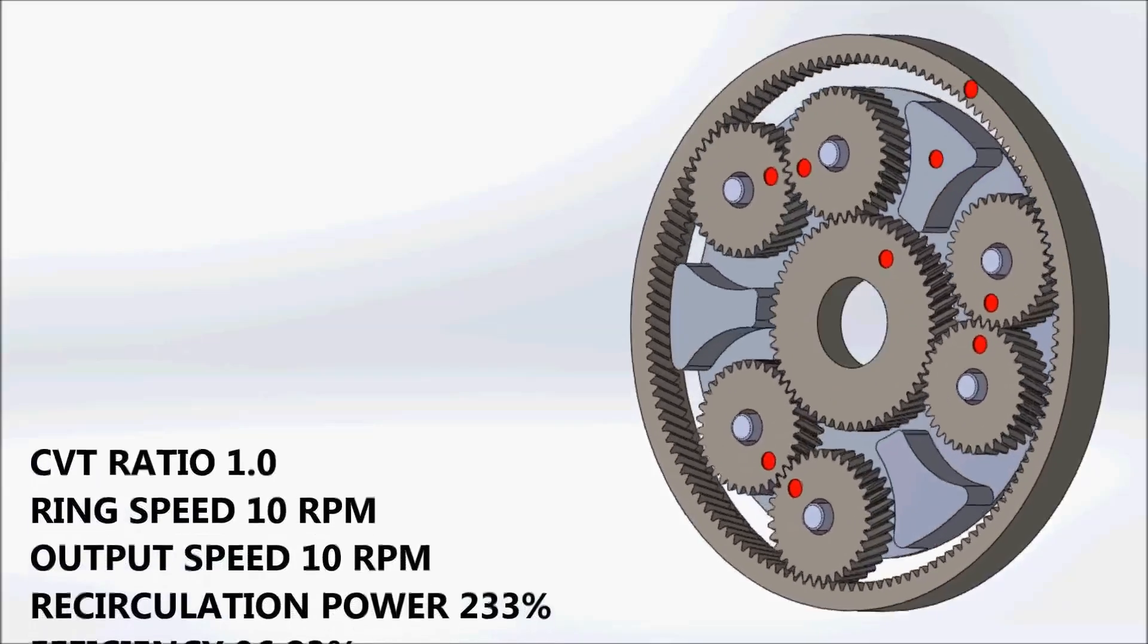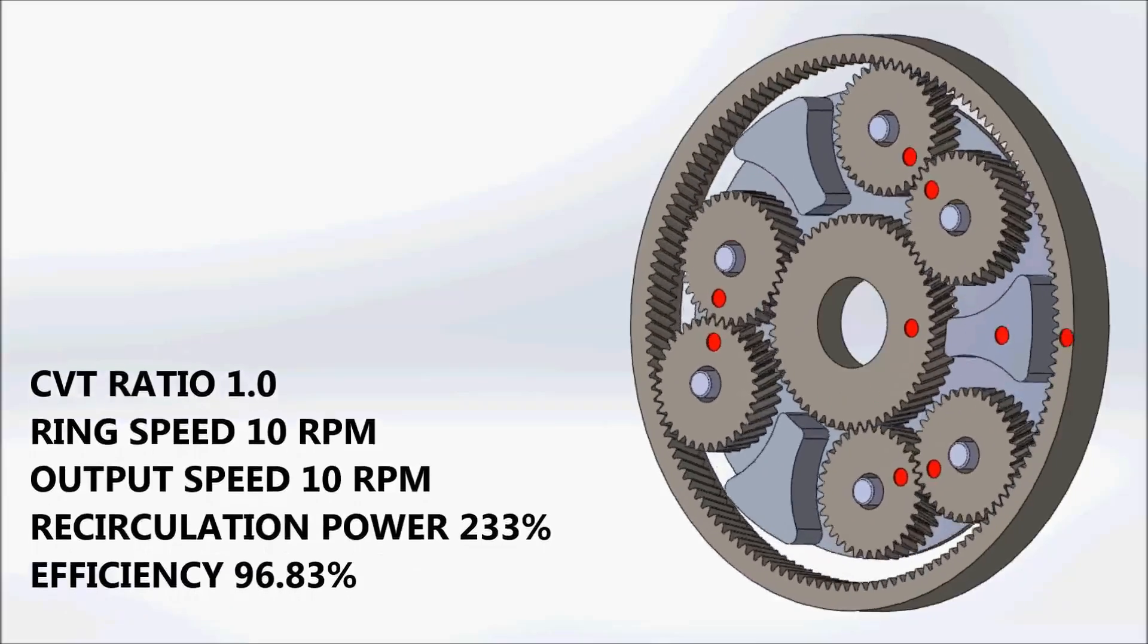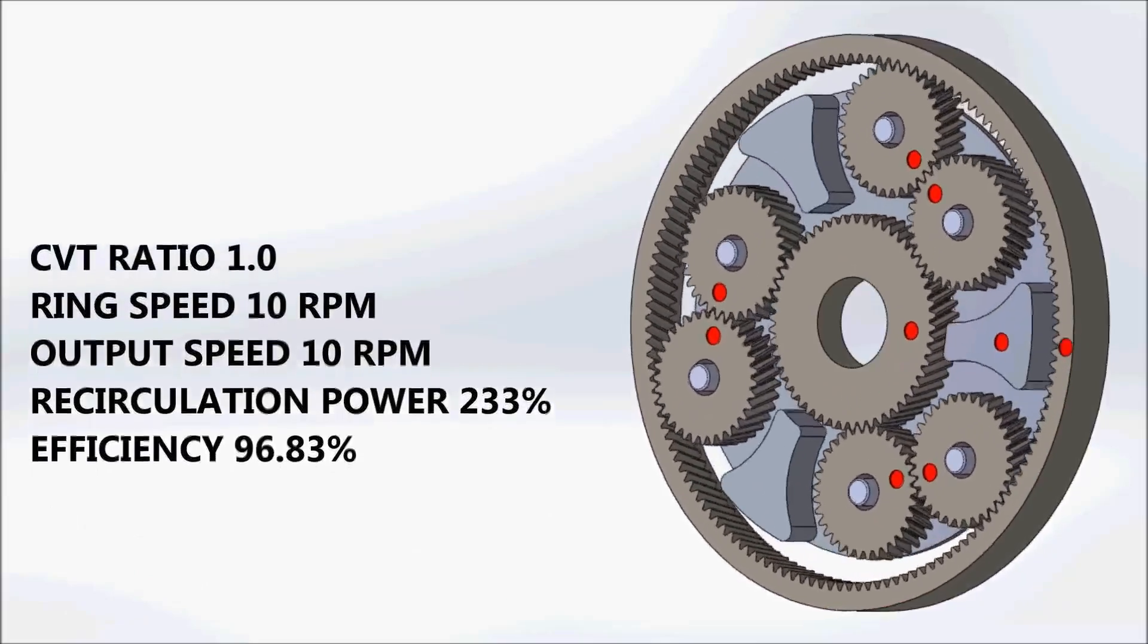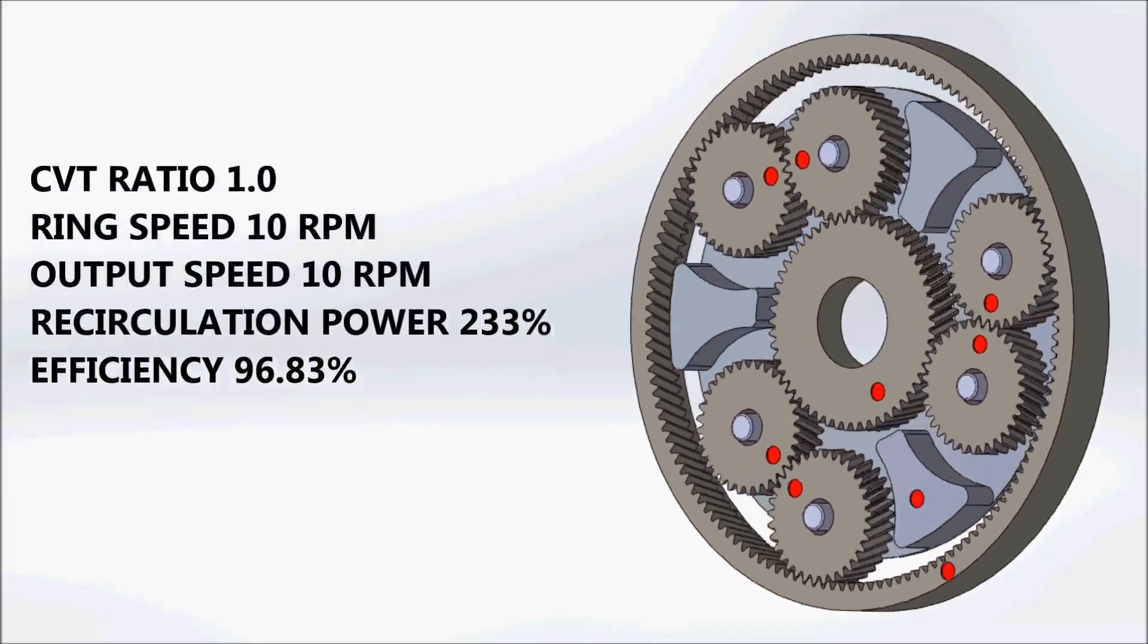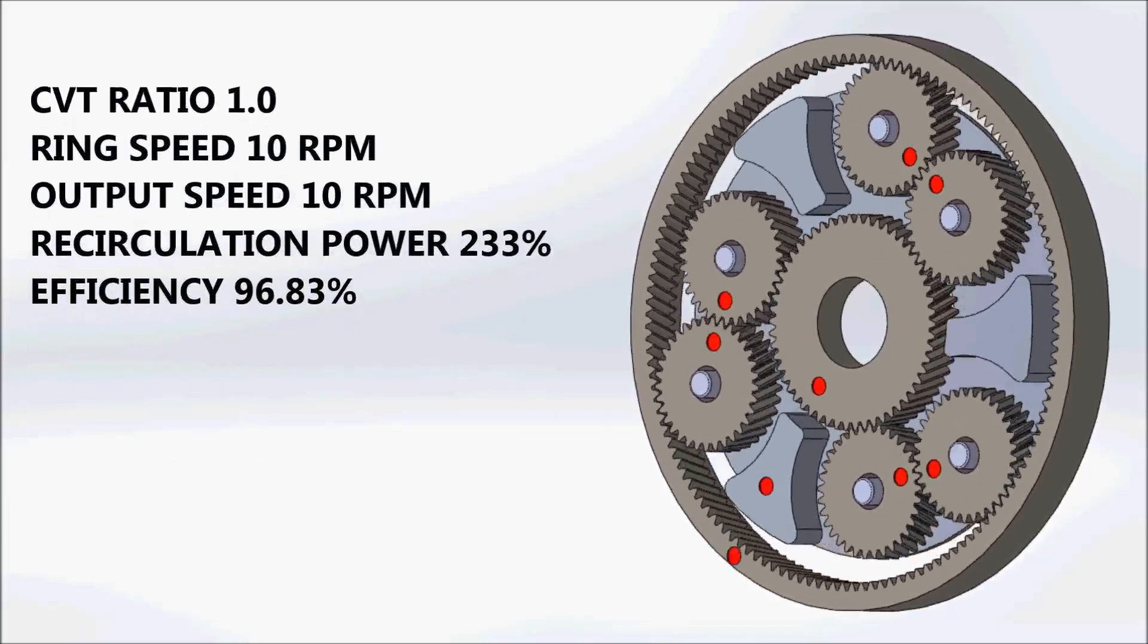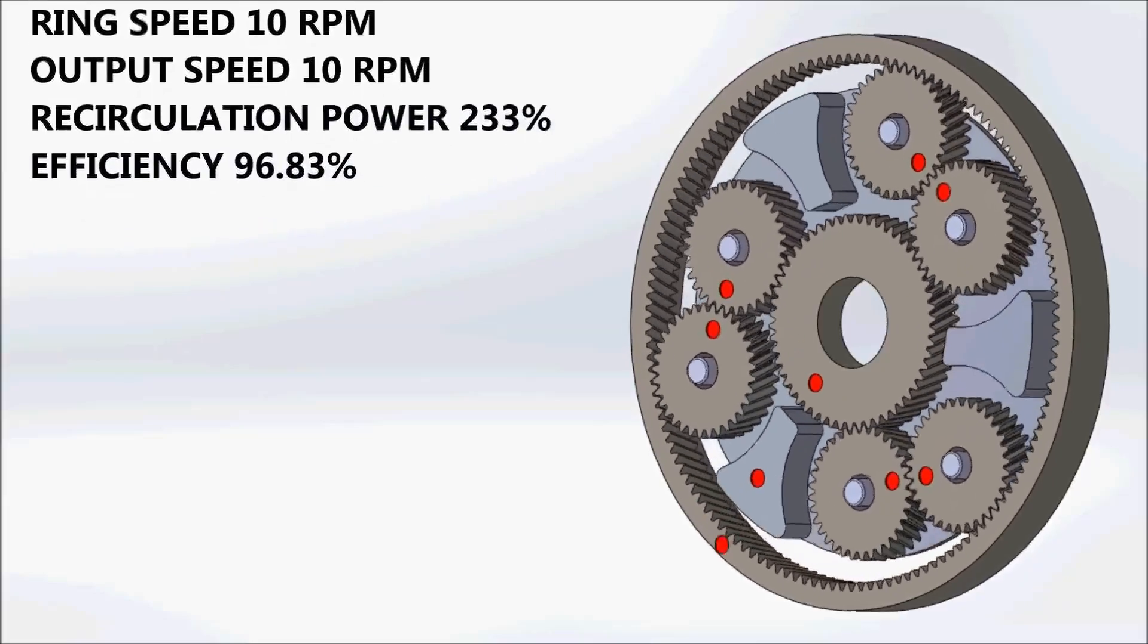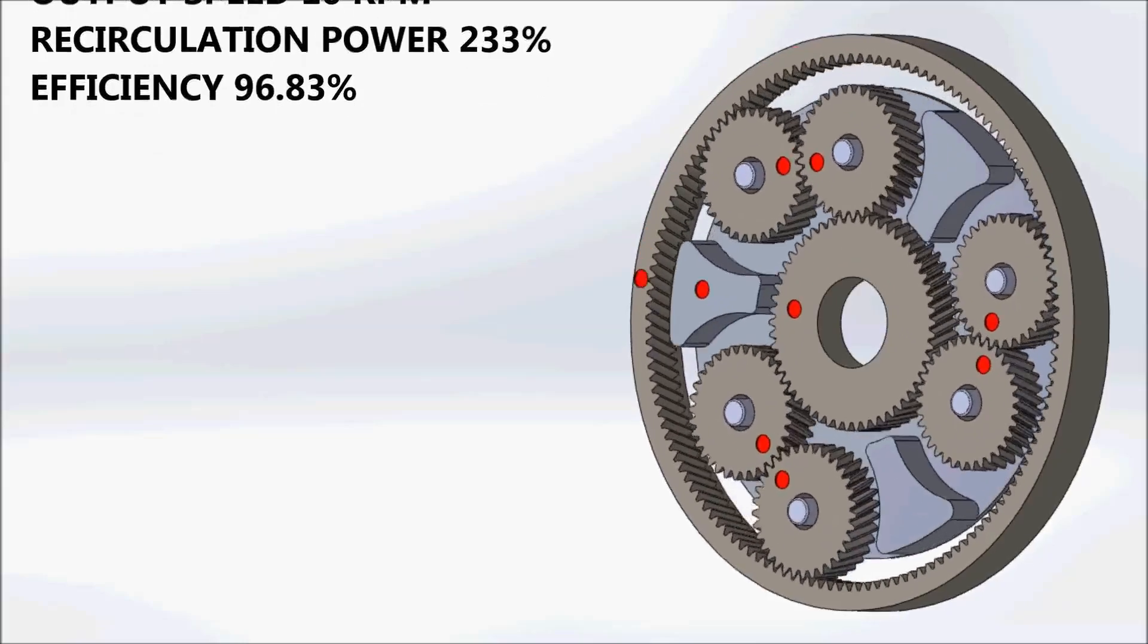When the ratio of the CVT becomes 1, the sun, carrier, and ring all rotate at the same speed of 10 rpm. The planets no longer need to rotate, and the CVT itself becomes almost 100% efficient, because nothing is actually moving within it. The double roller CVT is also over 98% efficient in this state, resulting in an extremely efficient overall system, even though there continues to be some recirculating power present.